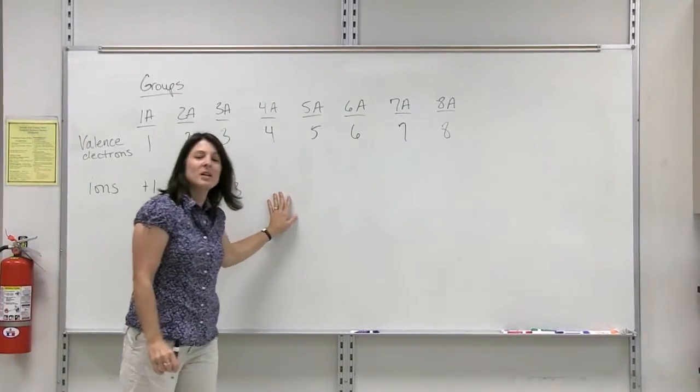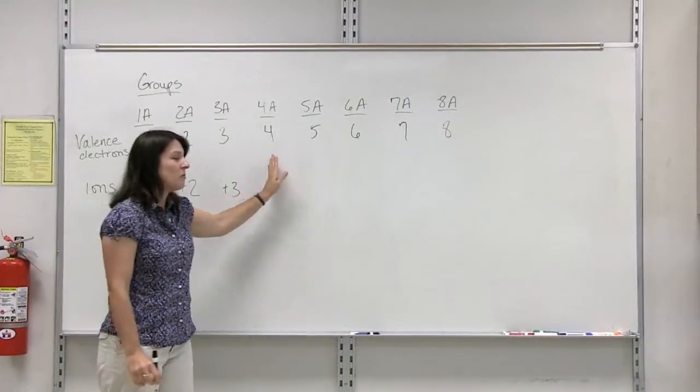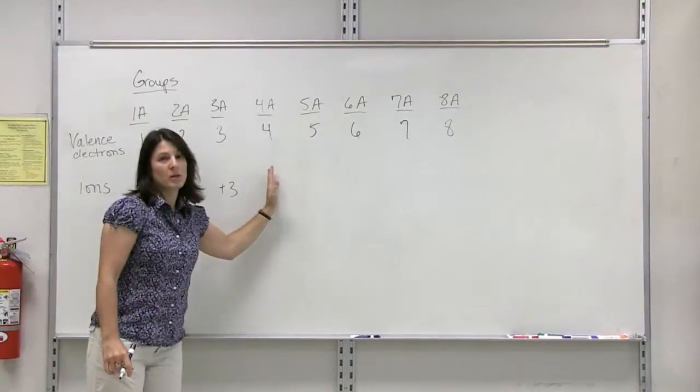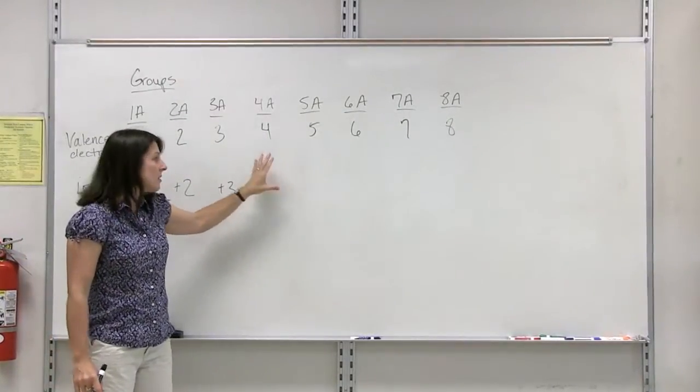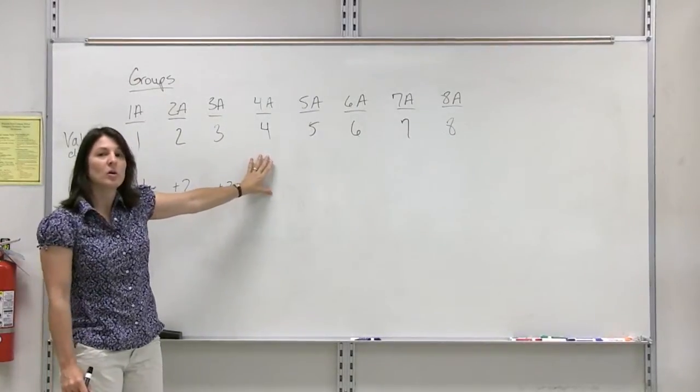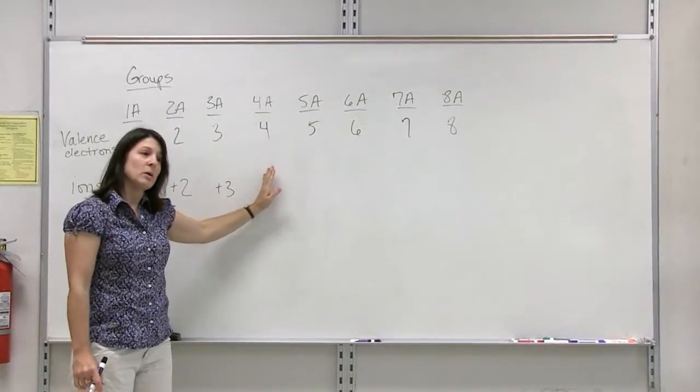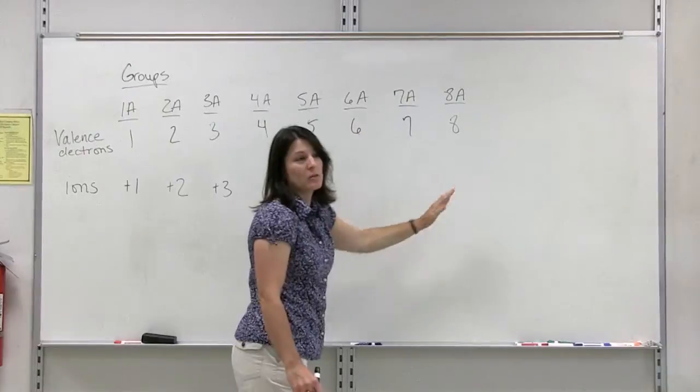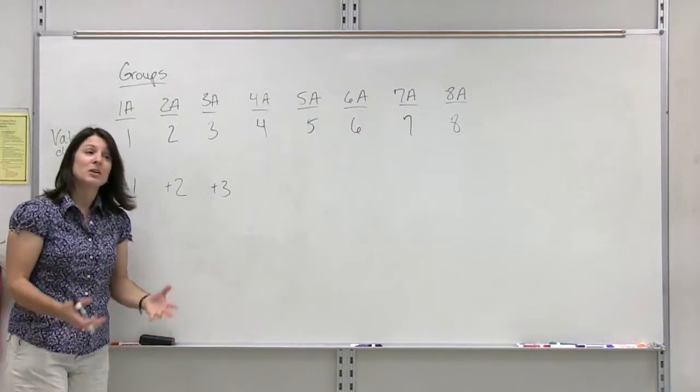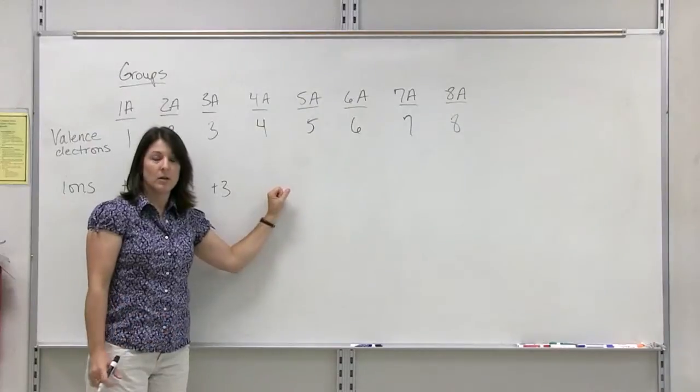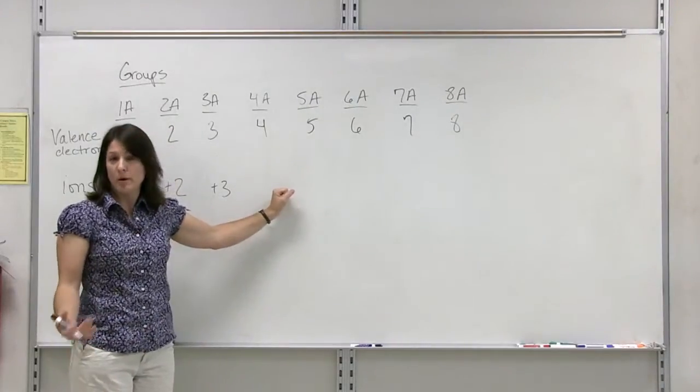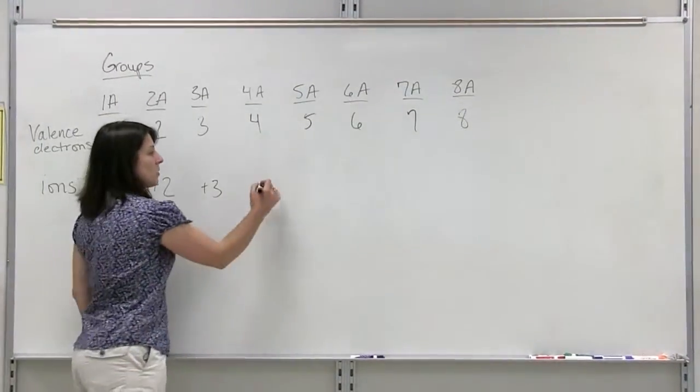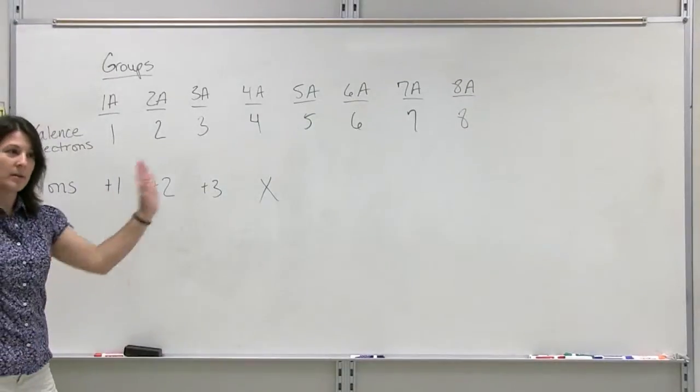Group 4A doesn't follow the pattern. In group 4A, the elements are mostly nonmetals. Nonmetals that have four valence electrons, the upper ones, aren't going to form ions. They would either have to lose four electrons or they would have to gain four electrons and that's too much energy involved. So normally we're not going to see ions here. Some of the transition metals will form plus four charges, but that doesn't apply to all of these. So we are going to just kind of put an X here and skip over that.